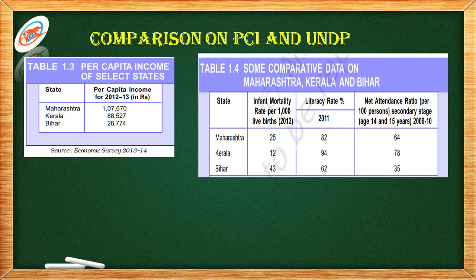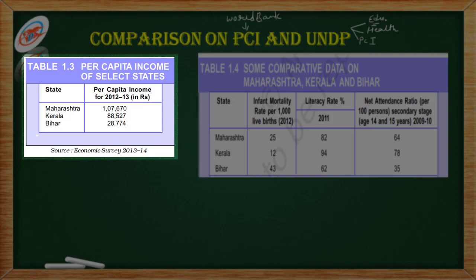In this slide, we are going to compare some states of India on the basis of PCI and UNDP. PCI is a criteria used by the World Bank, whereas UNDP — United Nations Development Programme — looks at PCI plus health status of people and the educational category. If we look at table number 1.3, we find three states: Maharashtra, Kerala, and Bihar. The per capita income of Maharashtra is 1,07,670 rupees.